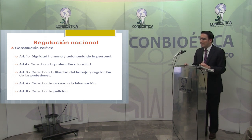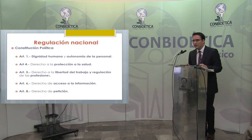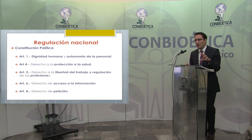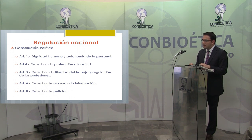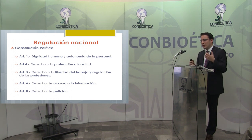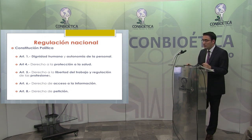En la regulación nacional, ¿qué artículos de la Constitución pueden chocar con el consentimiento informado? Primero el artículo 1°, rector en materia de derechos humanos sobre dignidad humana y autonomía de la persona. El artículo 4°, presente en toda situación donde confluyen derecho y salud, que regula el derecho a la protección a la salud. El artículo 5°, muy importante, que contempla el derecho a la libertad de trabajo y regulación de las profesiones.